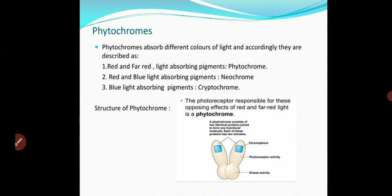In summary, phytochrome is an important pigment that regulates photomorphogenic aspects of plant growth and development such as seed germination, stem elongation, leaf expansion, formation of certain pigments, chloroplast development, and flowering. Many flowering plants use photoreceptor proteins — phytochrome and cryptochrome — to sense seasonal changes in night length or photoperiod, which they take as a signal to flower. The PR to PFR and PFR to PR conversion system allows plants to sense whether it is night or day.